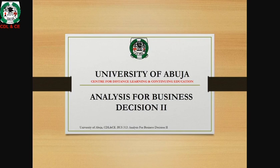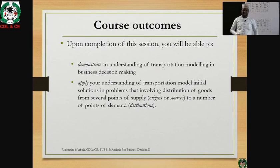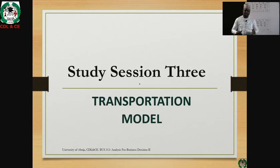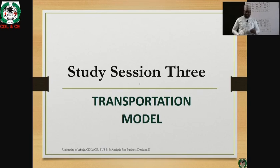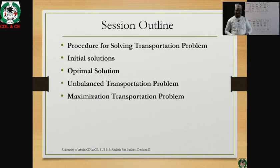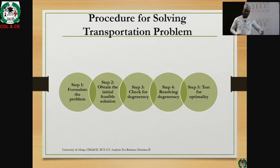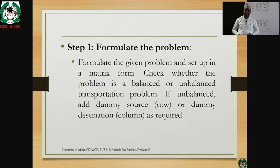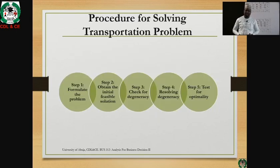We are going to begin by looking at the initial solutions. The initial solutions are basically three: the northwest corner rule, the least cost method, and the Vogel approximation method. These three initial solutions give varying degrees of sub-optimal results. The northwest corner rule gives the least desirable results, followed by the least cost method, and finally the Vogel approximation method gets us closest to the optimal solution.